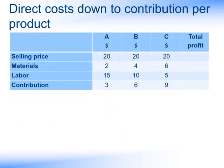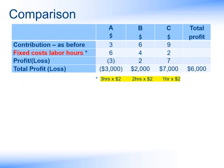Let's now calculate our profit per product. The contribution will be exactly the same as it was when we used the materials as the basis — taking selling price, less materials, less labour gives us our contribution. Let's now allocate our fixed costs using labour hours. For product A, we'll be using 3 hours, multiplied by our $2 per labour hour overhead absorption rate, giving $6 of fixed costs to product A. Using the same basis for products B and C, we arrive at profit and loss for each product. Multiplying product profit by the volumes produced, we still arrive at a total profit of $6,000, because nothing has changed except the way we've allocated the overheads.